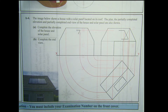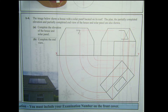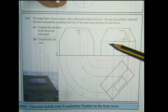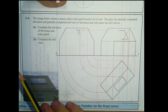The final question is question A4, an orthographic projection question. The image shows a house with a solar panel located on its roof. The plan, the partially completed elevation, and partially completed end view of the house and solar panel are given. The plan is finished; the elevation and end view are not. I'm going to start by finishing the elevation.